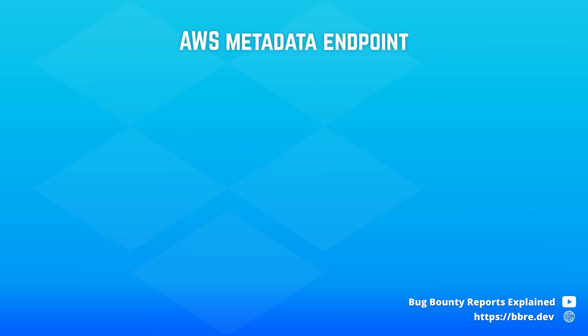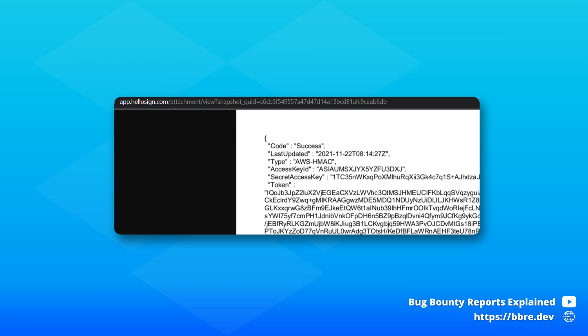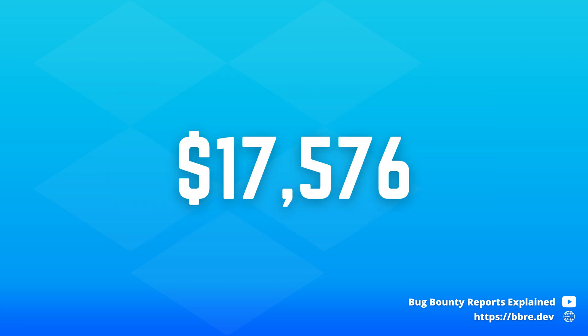What's the impact of this? The HelloSign application is hosted on AWS. You can use the metadata URL which contains AWS credentials, which you can use to log in to the server. From there you have multiple ways to steal data of other users of the HelloSign application. That's why this vulnerability was classified as critical and rewarded over seventeen and a half thousand dollars.